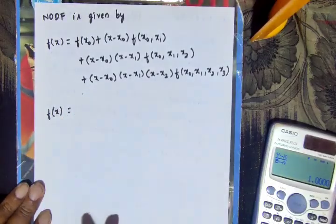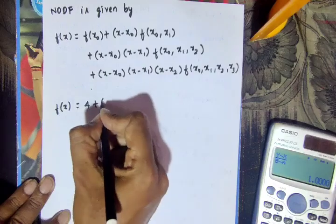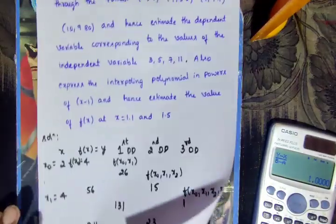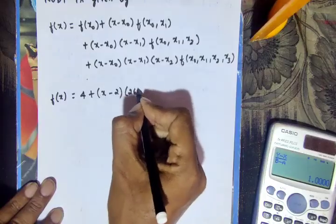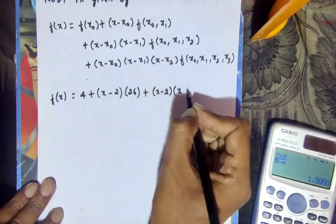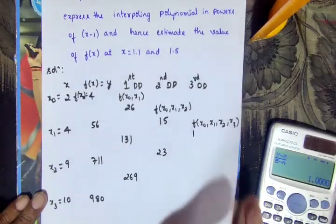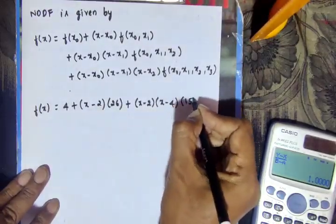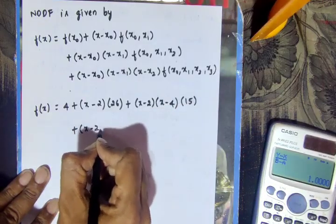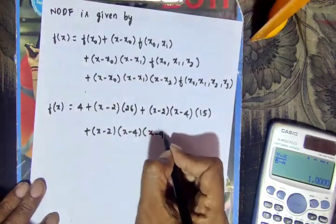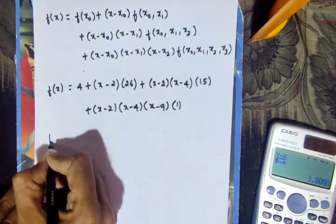Substituting values: f(x) = 4 + (x - 2)·26 + (x - 2)(x - 4)·f[x0,x1,x2] which gives 15, plus (x - 2)(x - 4)(x - 9)·1.